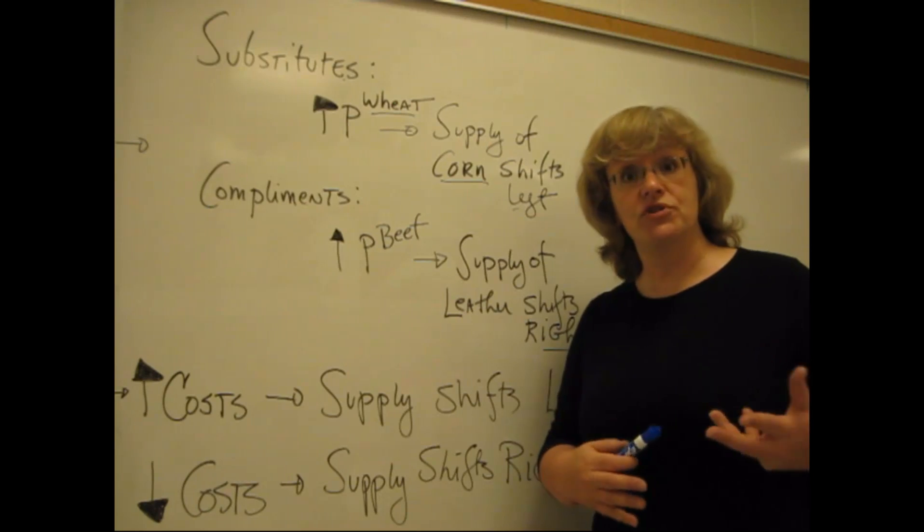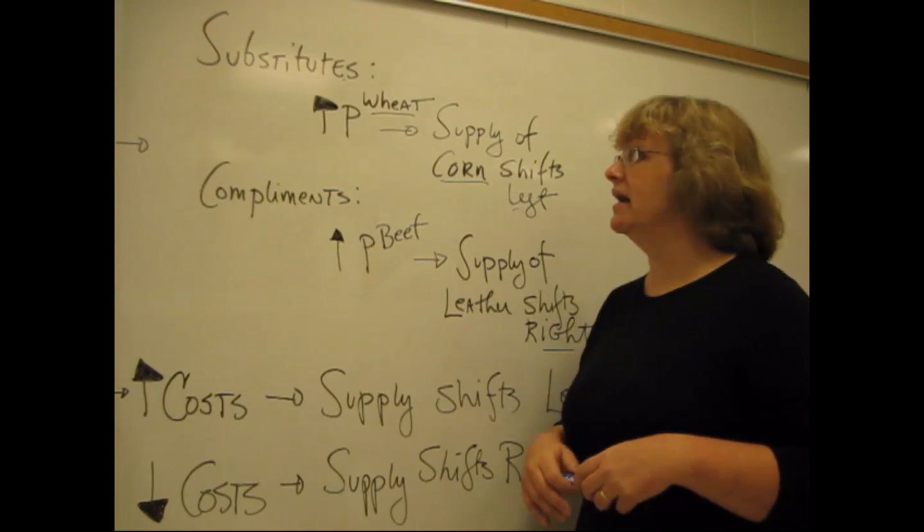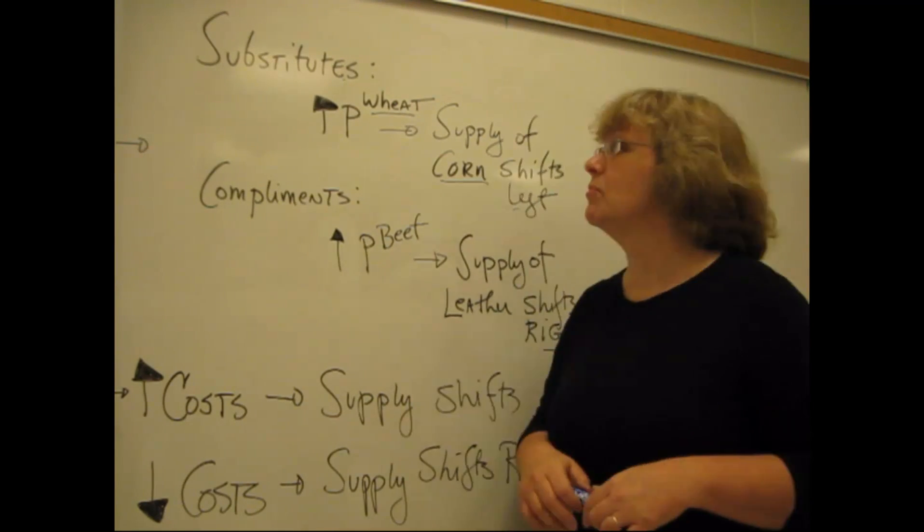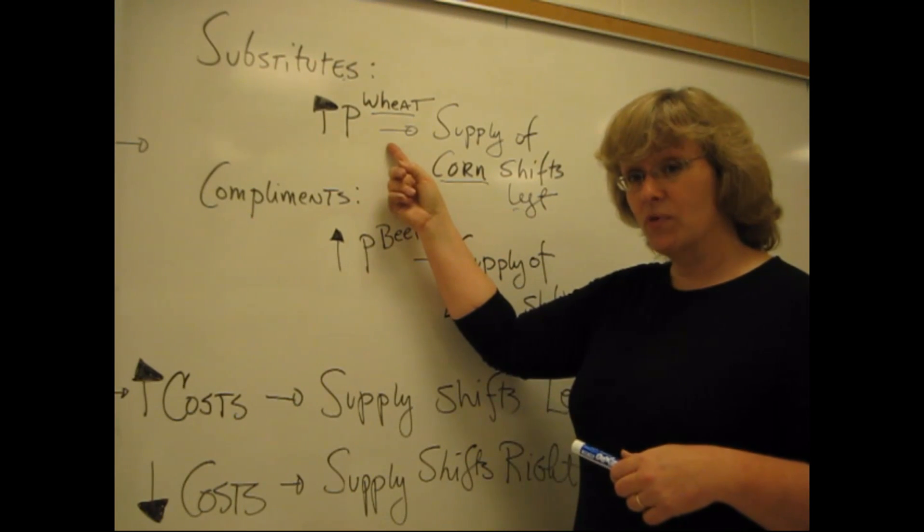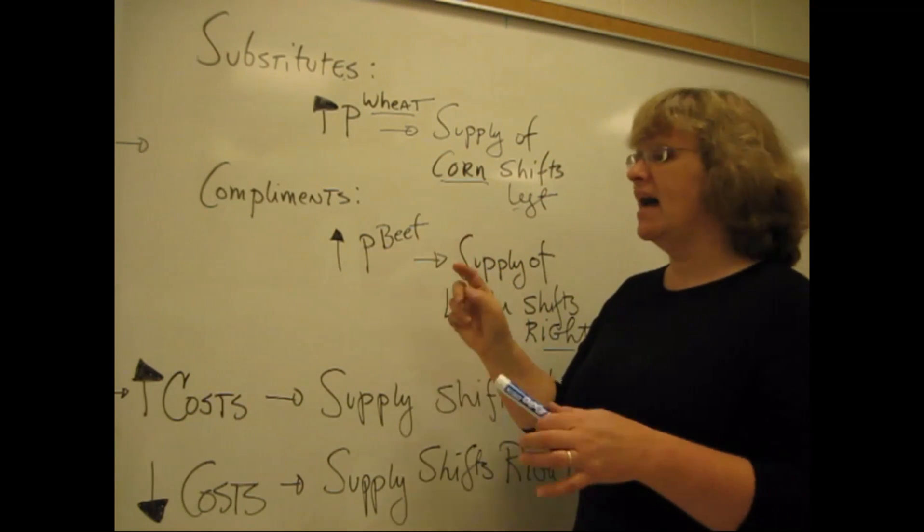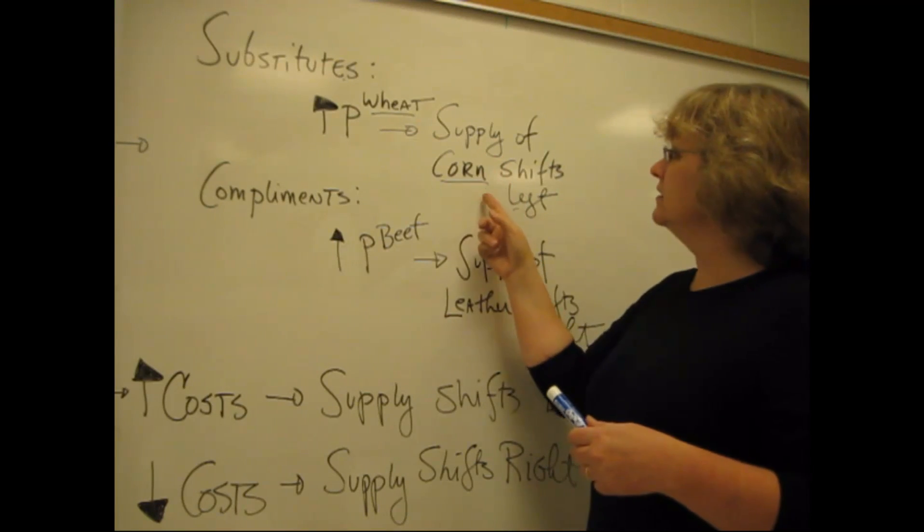And we say that these two particular products are substitutes in supply, because a farmer might, for example, decide when they hear that the price of wheat is expected to go up or is going up, to supply a little bit more wheat and a little less corn.